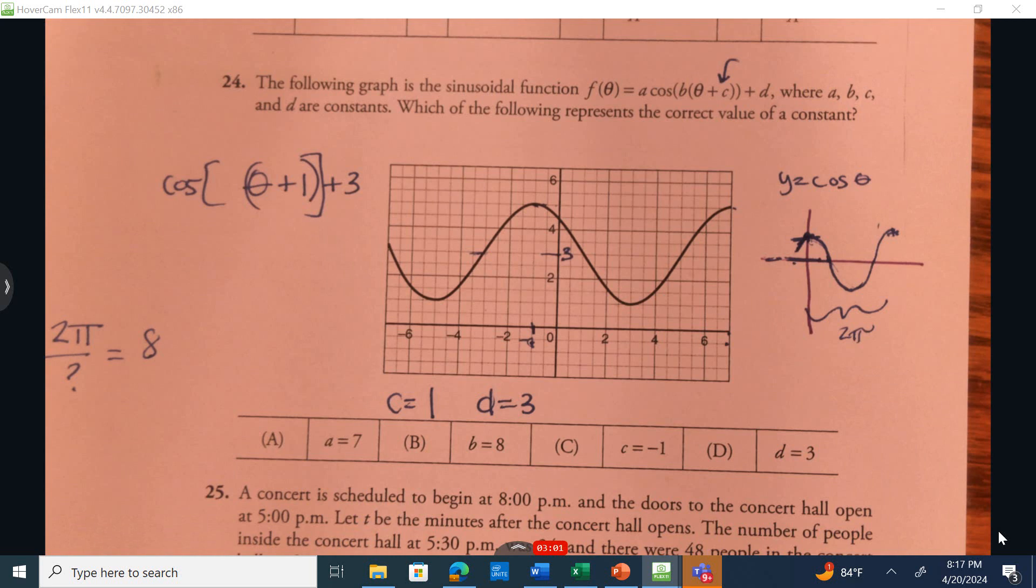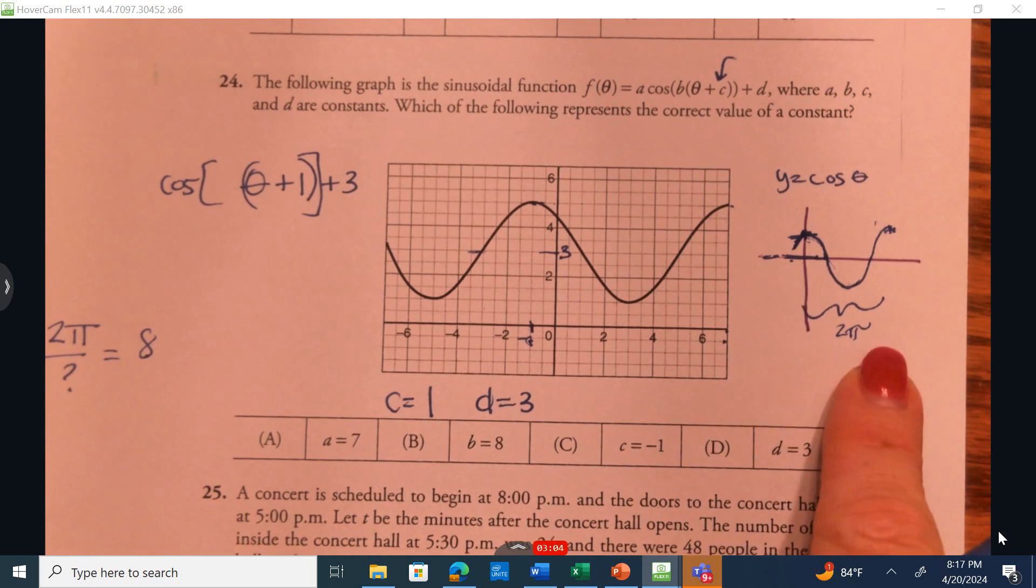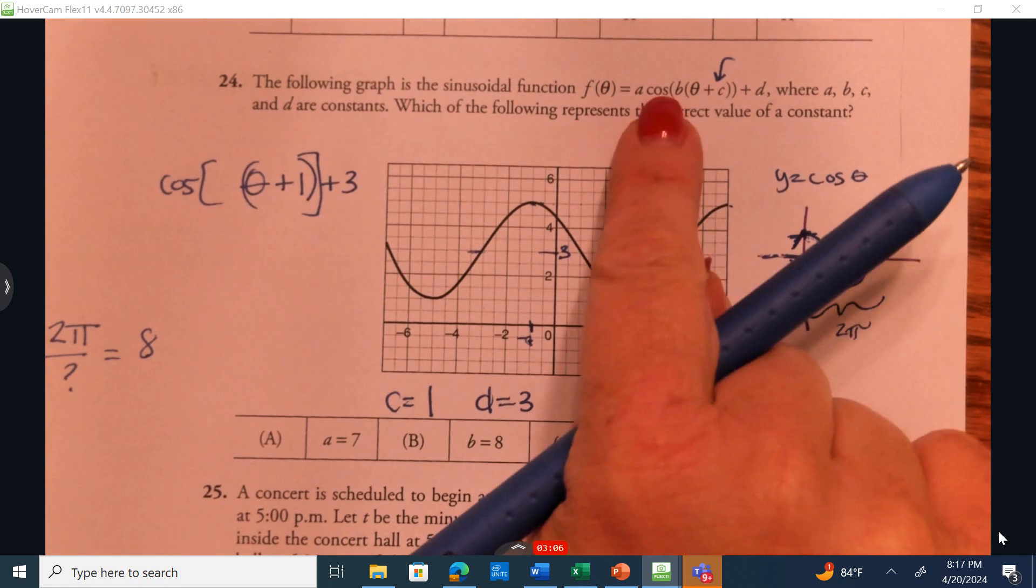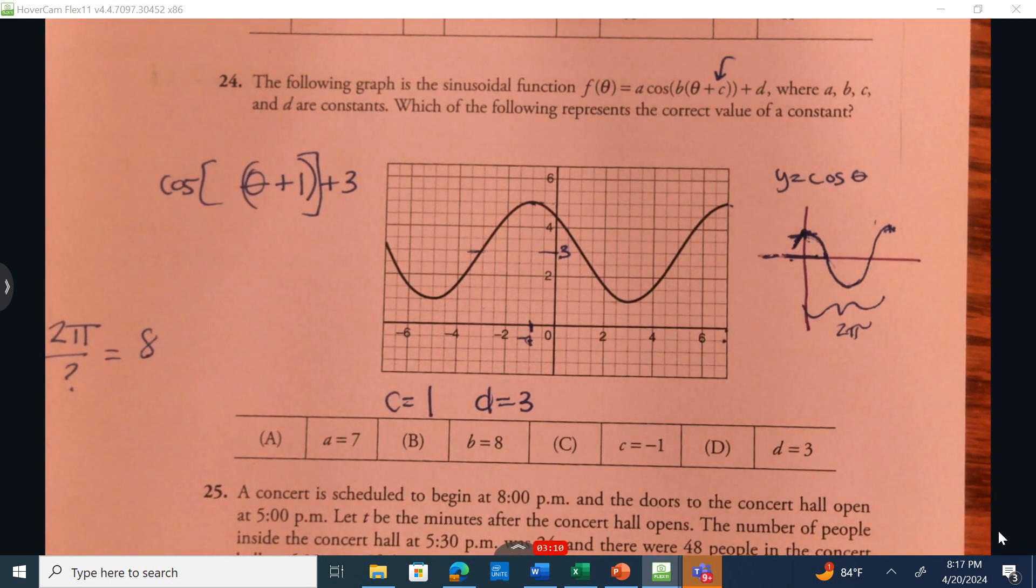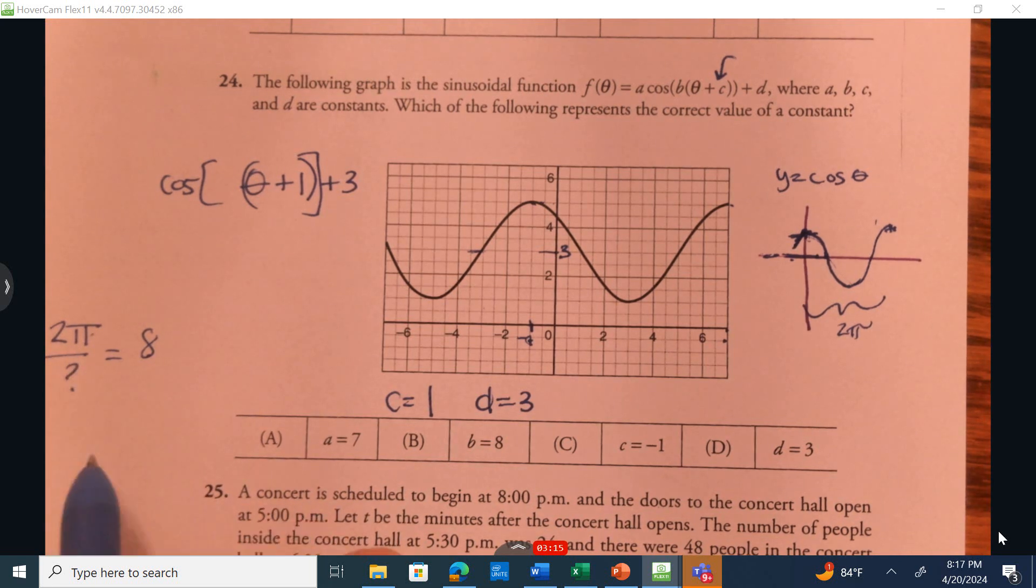So 2 pi divided by some value equals 8. Now why did I choose 2 pi? Sine and cosine have a period length of 2 pi. Now this has been translated, right? It's been transformed. Tangent has a period length of pi, so that's why I'm taking 2 pi and dividing it. Now I need to figure out what is this value.